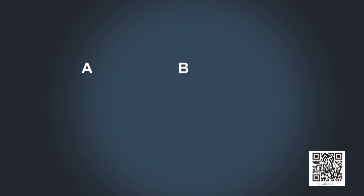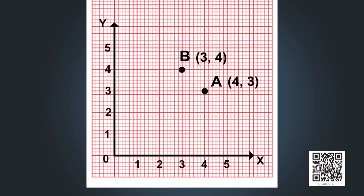Now we will plot points A and B. The coordinates of A are (4, 3) and the coordinates of B are (3, 4). Are A and B equal? No, we can clearly see they are not equal. For the coordinates to be equal, the corresponding x and y coordinates of the two points must both be equal. Since they are not equal here, A and B are not the same point.